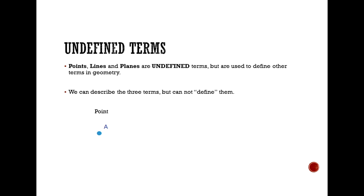So here's a description of the three terms listed above. A point is a location, but it has no size. A line consists of an infinite number of points. It extends infinitely in either direction, but it has no width.